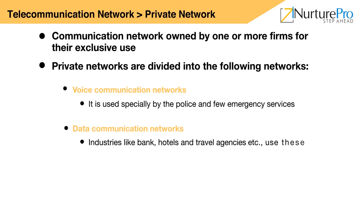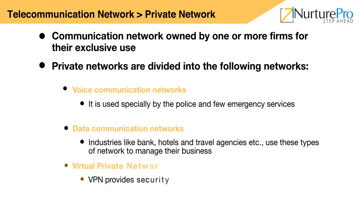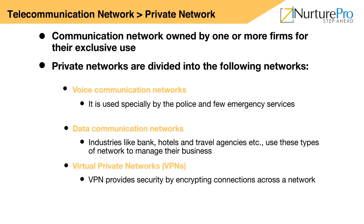Data communication networks refer to the transmission of digital data between computers within an organization. They are private in nature and are used in banks, hotels, and travel agencies to manage their widespread information. A virtual private network (VPN) extends a private network across a public network such as the internet. Since private networks are very expensive, organizations use VPNs for their communication. VPNs may allow employees to securely access a corporate intranet while located outside the office. VPN provides security by encrypting the connections across the network.